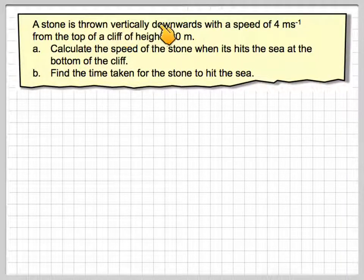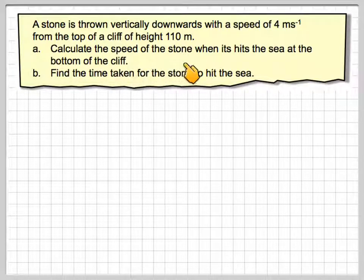A stone is thrown vertically downwards with a speed of 4 metres per second from the top of a cliff of height 110 metres. Calculate the speed of the stone when it hits the sea at the bottom of the cliff and find the time taken for the stone to hit the sea.